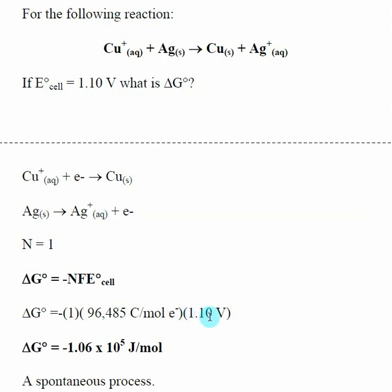So I was given the number of volts for my E naught cell. Faraday's constant, I look up, and then N is equal to one because of my electrochemical equation.